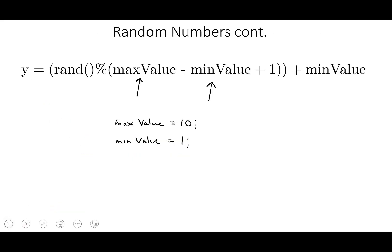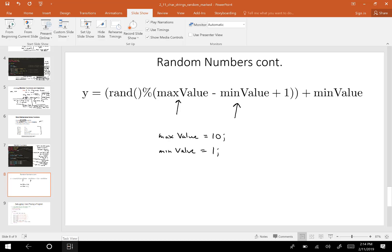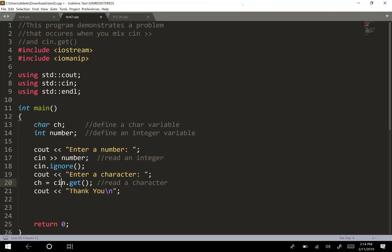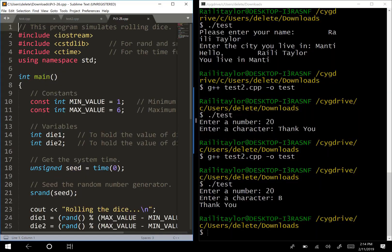Let's look at some code with the random number. So I want to look at a program that simulates rolling dice. So let's say we want to simulate rolling two dice. We would need to generate two random numbers that are between 1 and 6. This is program 3-26 in the book.